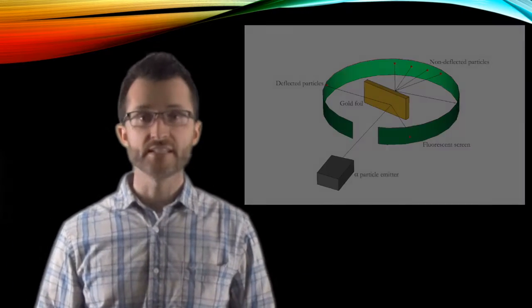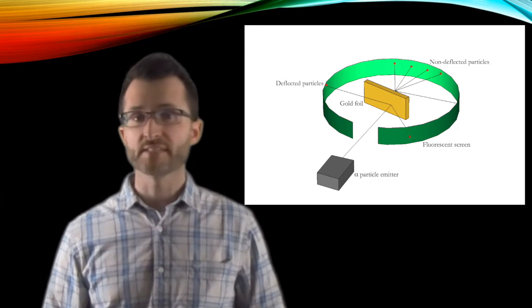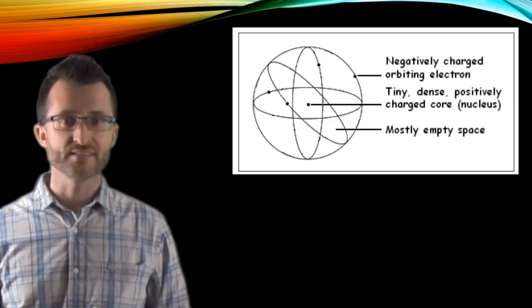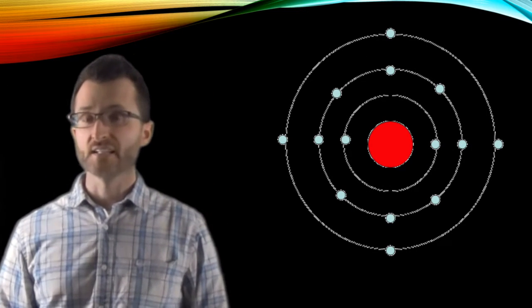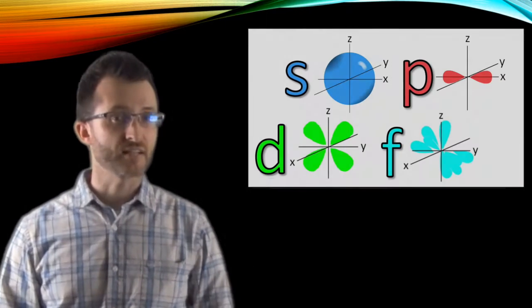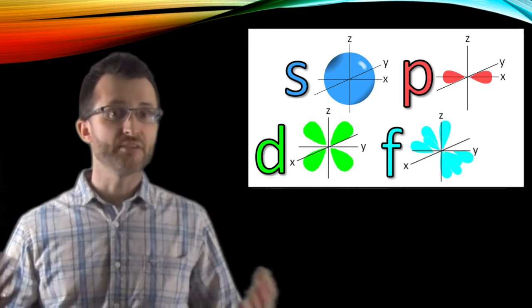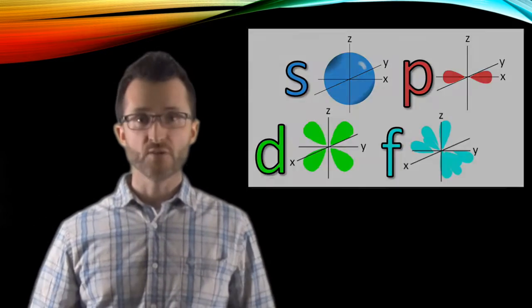We have Rutherford next, who in his gold foil experiment determined that there was a dense center called the nucleus, surrounded by mostly empty space. Next we have Bohr, who determined that the electron exists in specific energy levels through observing line spectrum. And finally, we have our modern model, sometimes called the electron cloud or wave mechanical model, and that has the electron in a region of space called an orbital.